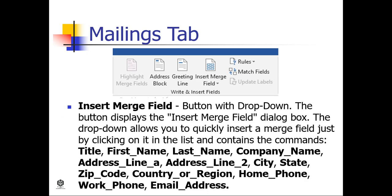The Insert Merge Field button with drop-down: the button displays the Insert Merge Field dialog box; the drop-down allows you to quickly insert a merge field by clicking on it in the list. It contains the commands: Title, First Name, Last Name, Company Name, Address Line 1, Address Line 2, City, State, Zip Code, and Country or Region.